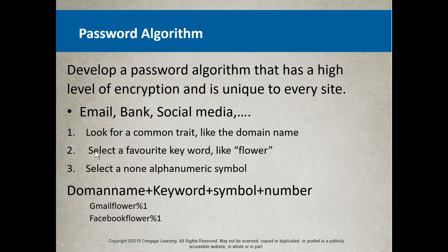The second part of the algorithm is to pick a favorite keyword you use for every single password — it could be a pet's name, family name, birth date, something like that. Let's say the word is 'flower.' Then you select a non-alphanumeric symbol. A lot of websites require this now, and hacking tools like to have 12 characters with upper/lower-alphanumeric plus a special character and a number.